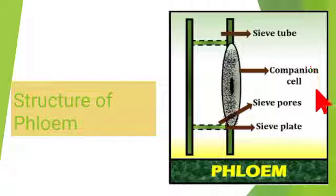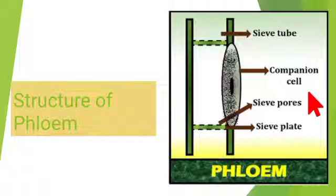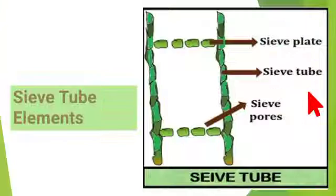It is a living tissue made up of sieve tube elements, companion cells, phloem parenchyma and phloem fibers. Most of the phloem is made up of sieve tube elements and companion cells.